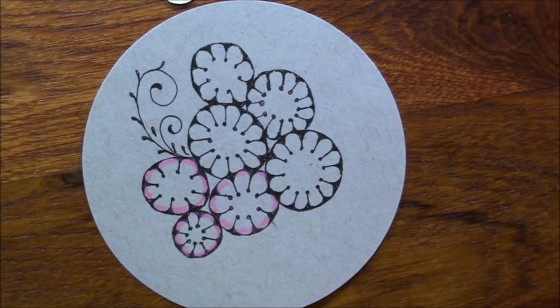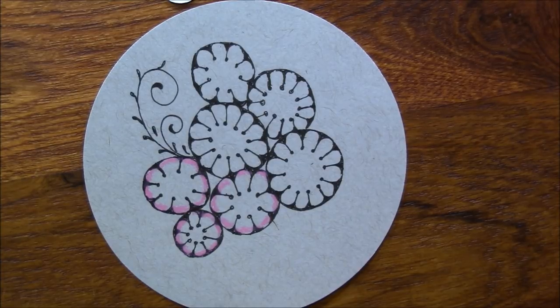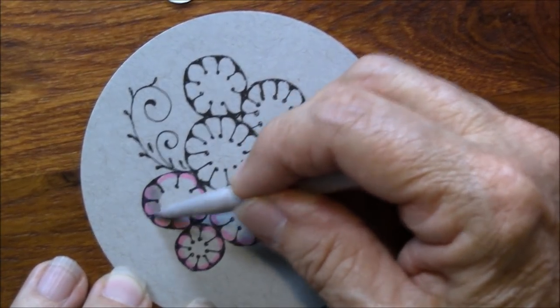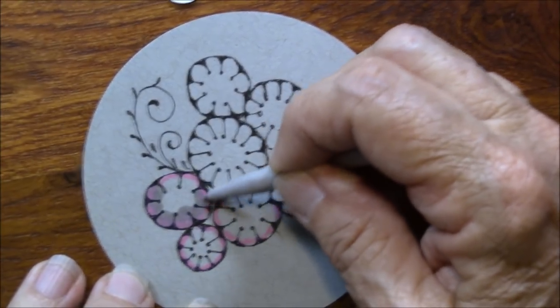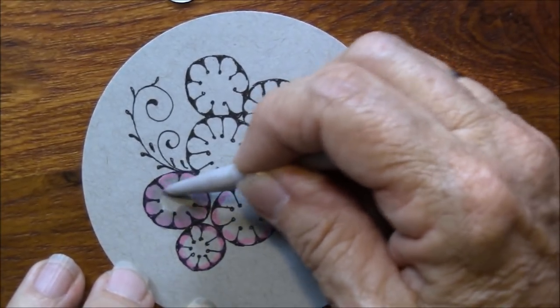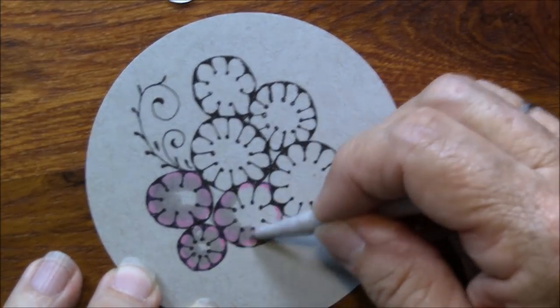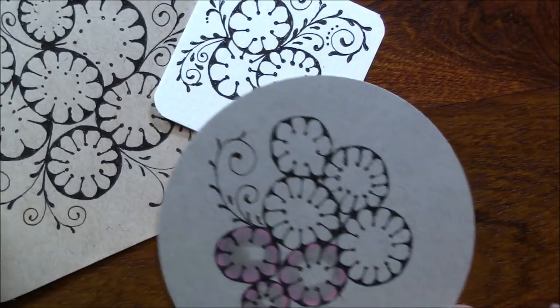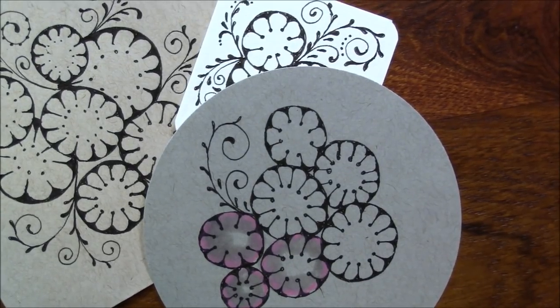We're going to just blend this little bit here with our odorless paint thinner. And when you blend on the gray, it turns the paper a little dark. But it will lighten back up. But this one's just fun. Fun little tangle. Paper Mint by Sandy Hunter.